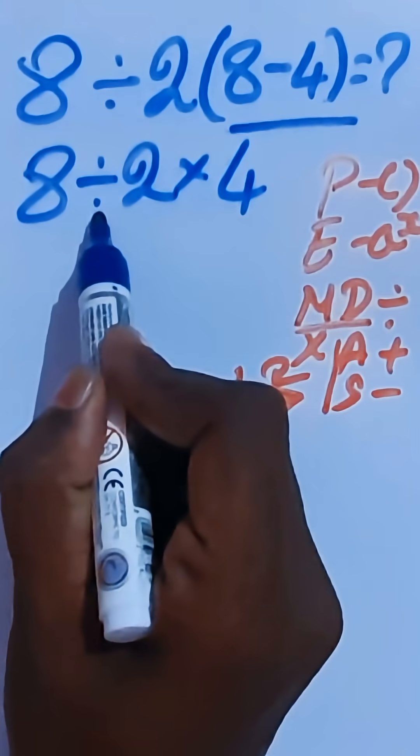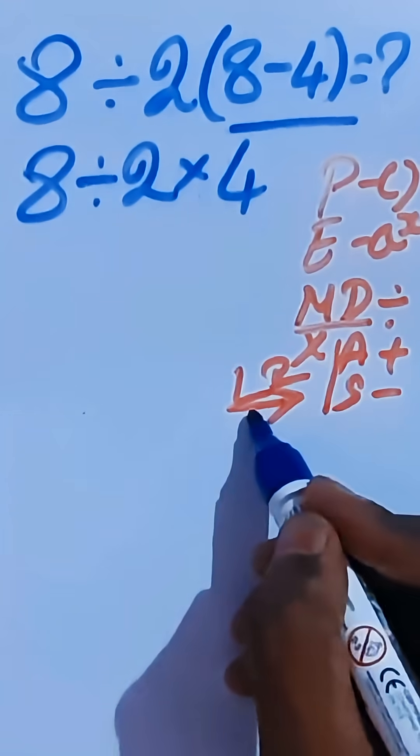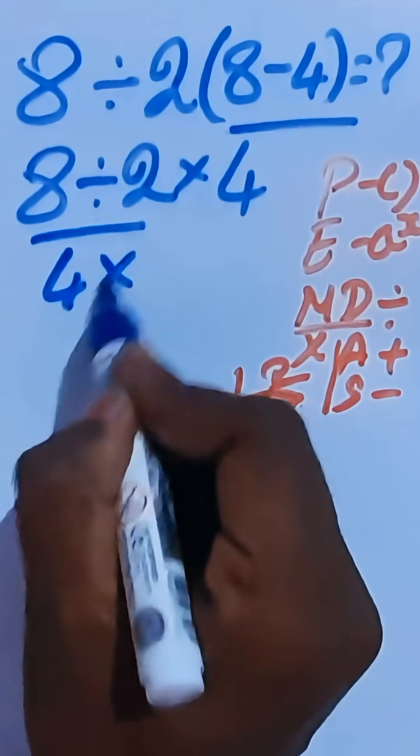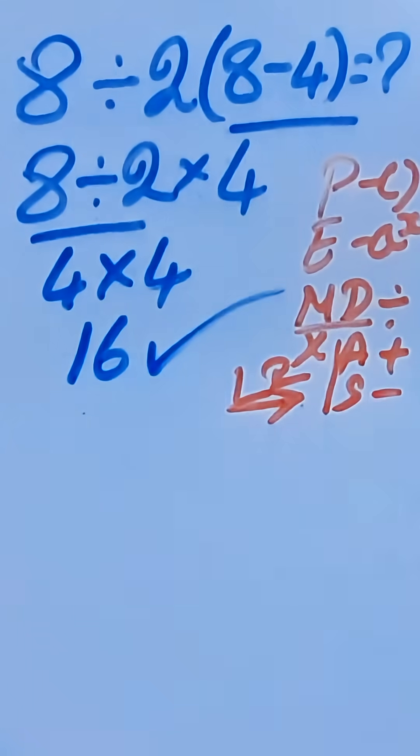We have division and multiplication, both equal priority. We have to follow the left-to-right rule. So going left to right: 8 divided by 2 is 4, then 4 times 4 is 16. This is the correct answer.